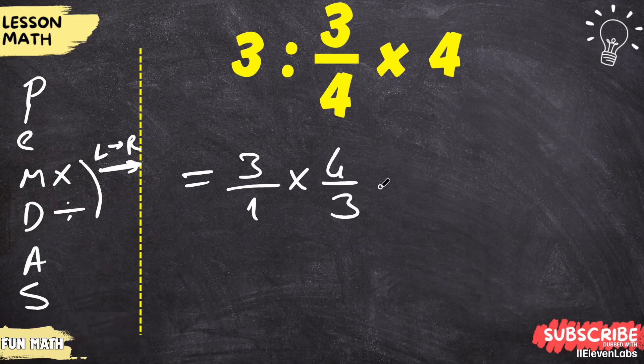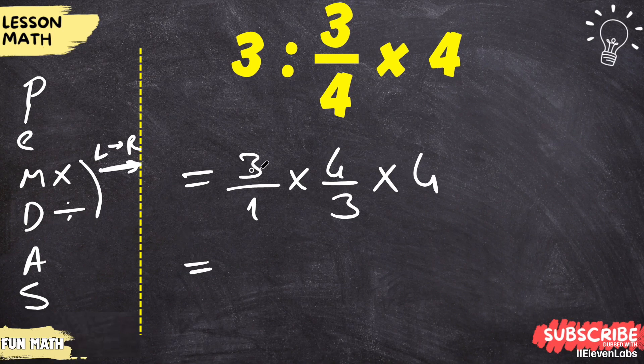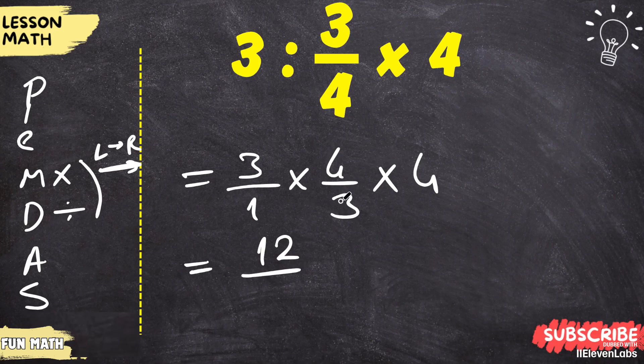It becomes 4 over 3, times 4. If we multiply here 3 times 4 is 12, 1 times 3 is 3, we say times 4.